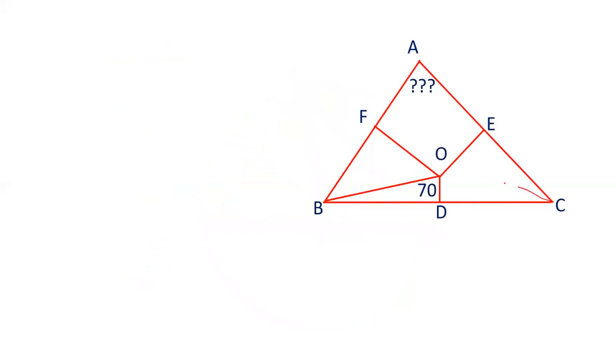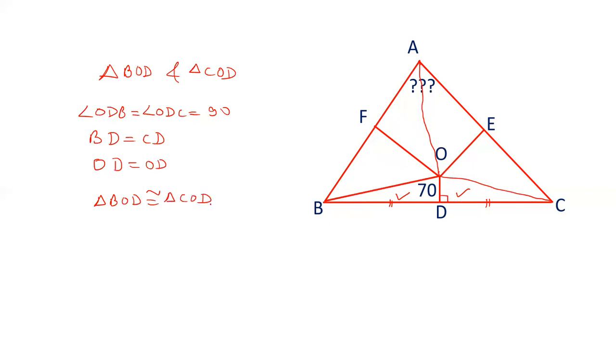Draw OC, join OC. Join OA. Now, in triangle BOD and COD, we have proved that this is perpendicular, this is equal to this. That is, angle ODB and angle ODC both are 90 degrees. BD equals CD and OD is common. So, triangle BOD is congruent to triangle COD, and therefore angle COD is also 70 degrees.